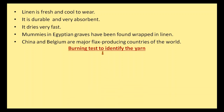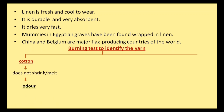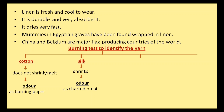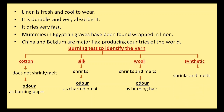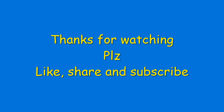Burning test to identify the yarn. Cotton does not shrink or melt, but when it burns, it smells like burning paper. Silk shrinks, and when it burns, it smells like charred meat — meaning meat that is blackened and burnt. Wool shrinks and melts, and when it burns, it smells like burning hair. Synthetic fibers shrink and melt, and when they burn, they smell like burning plastic.